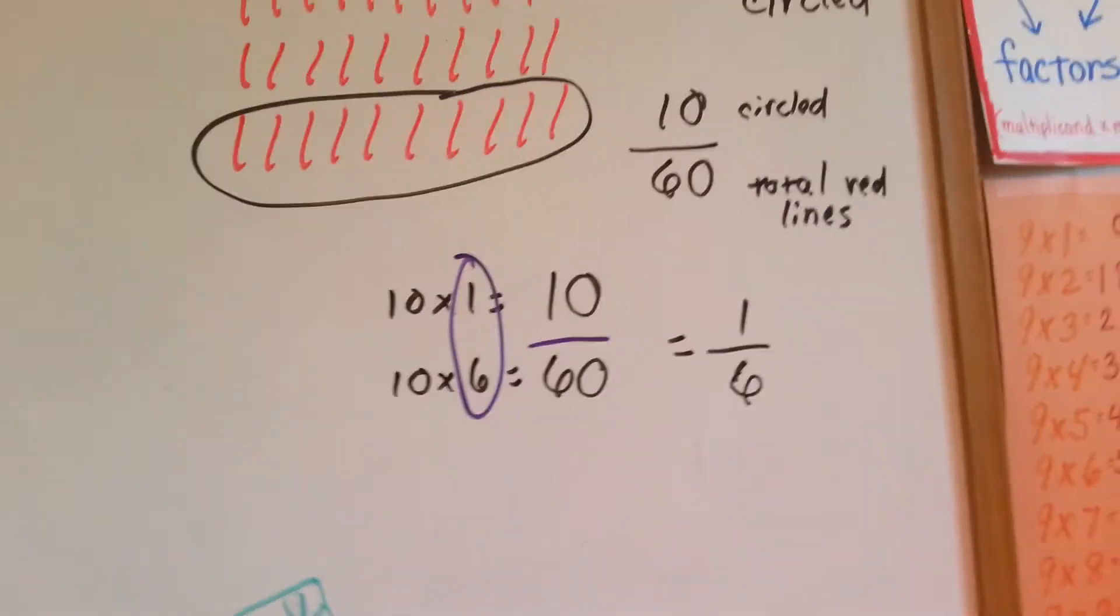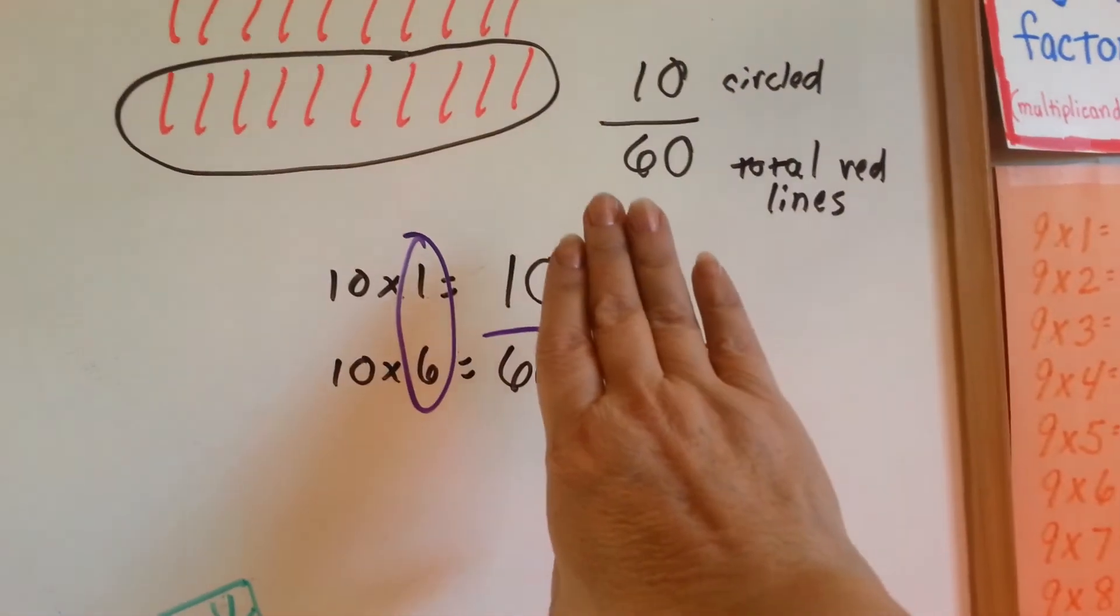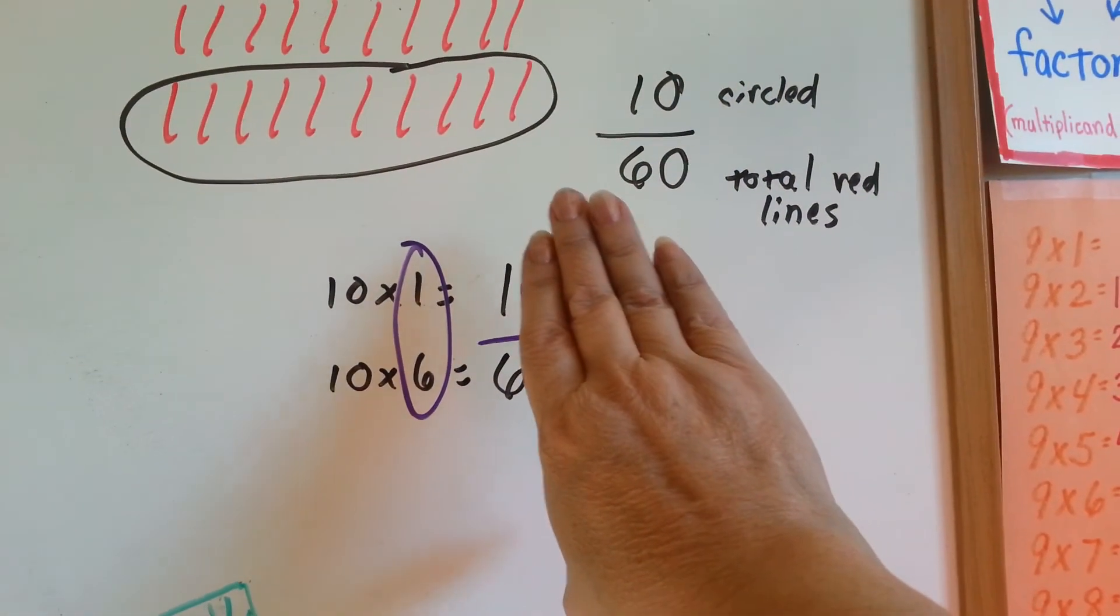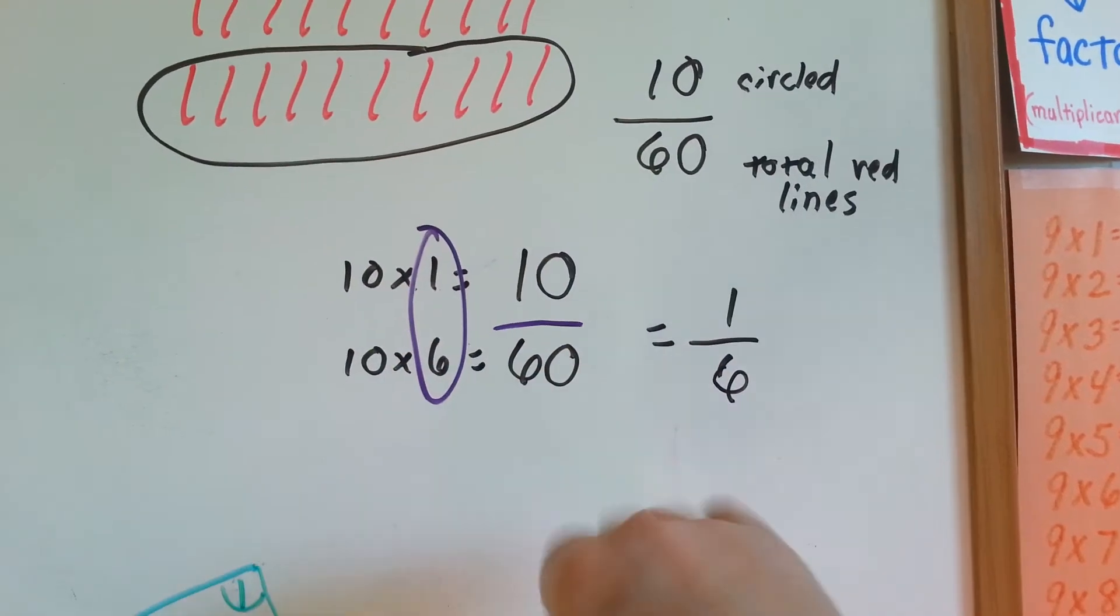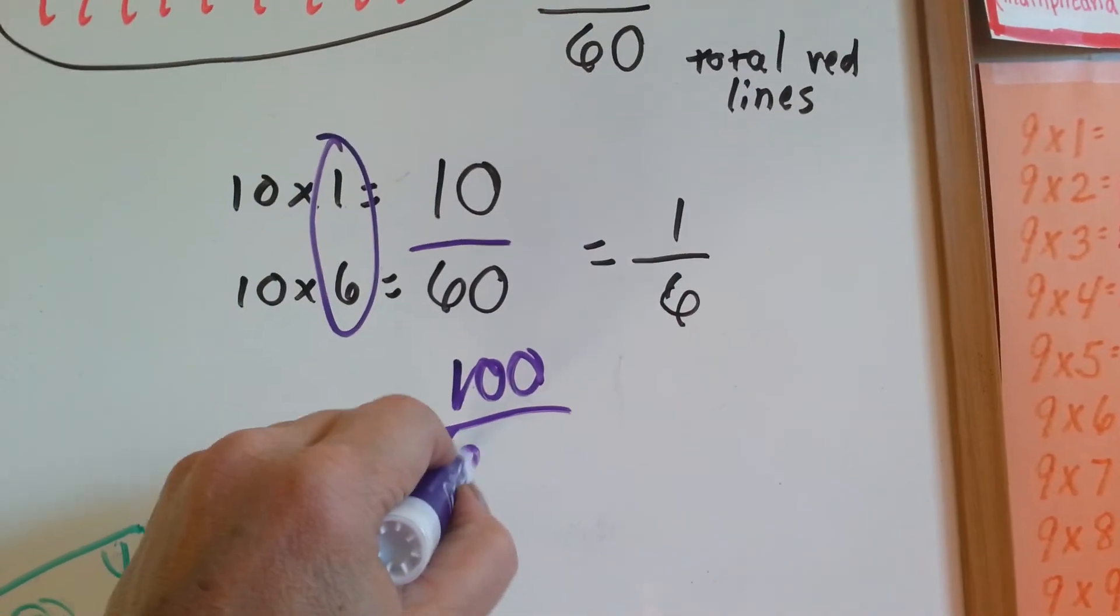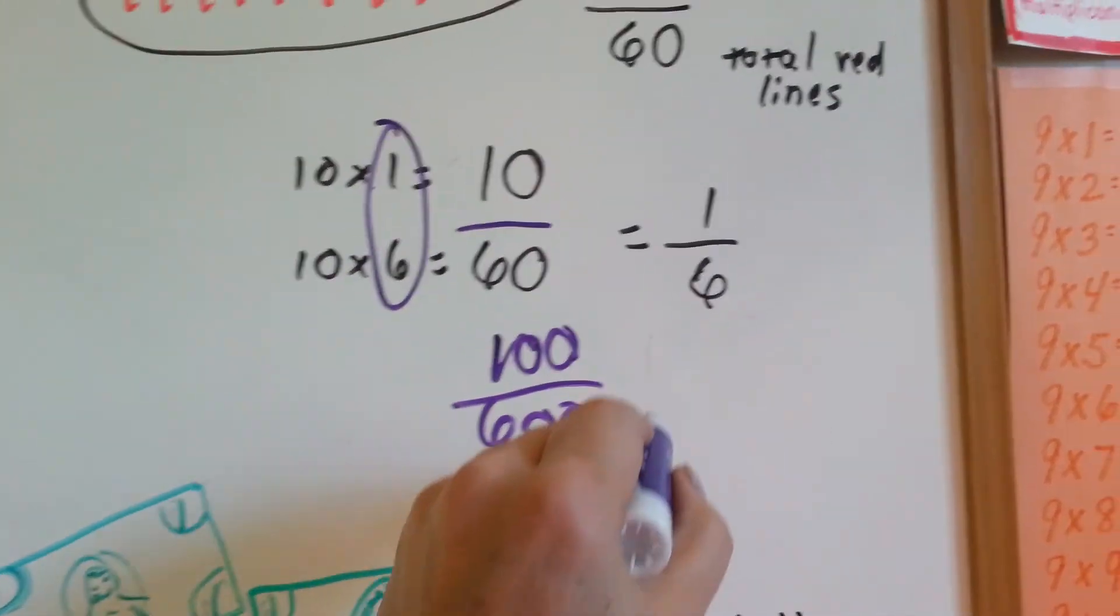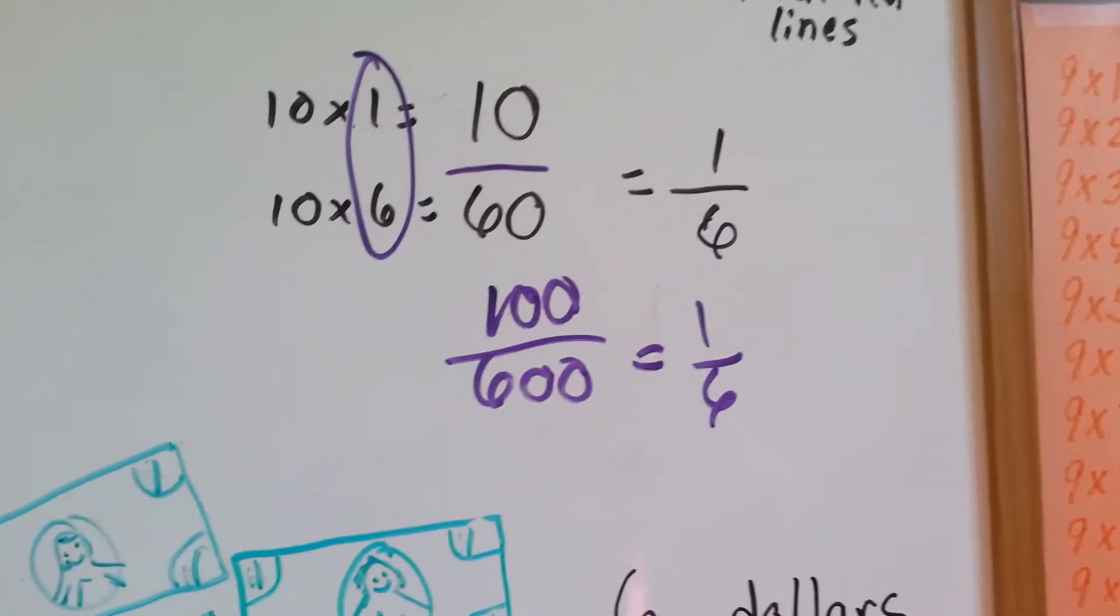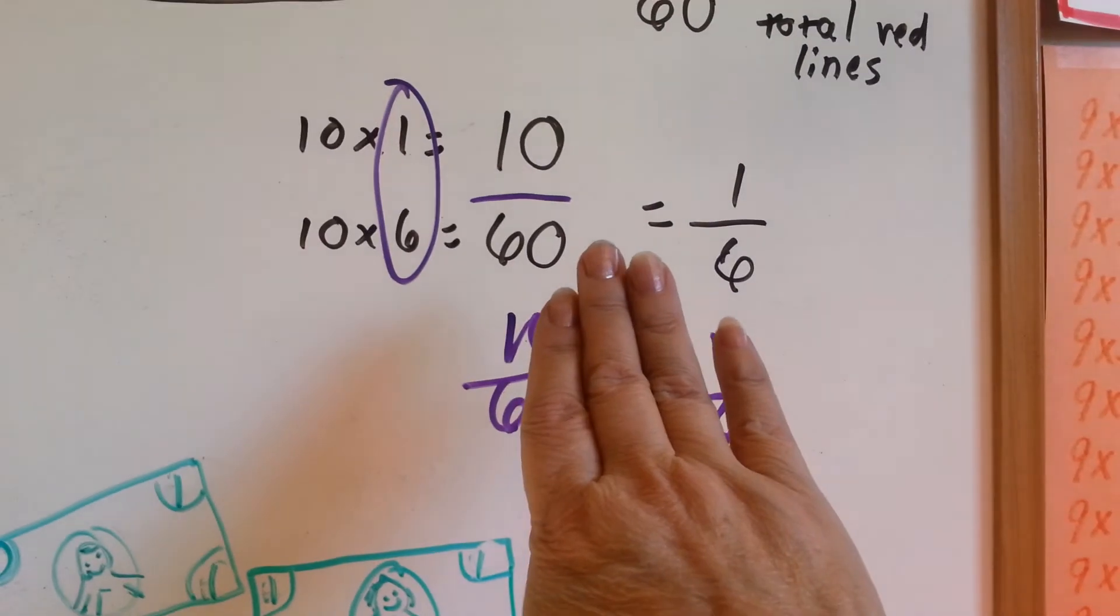And if you look, if we covered up these zeros, it looks like one-sixth, doesn't it? In fact, you could have one-hundred over six-hundred, and it would be equal to one-sixth. And all you'd have to do is cover up those zeros.